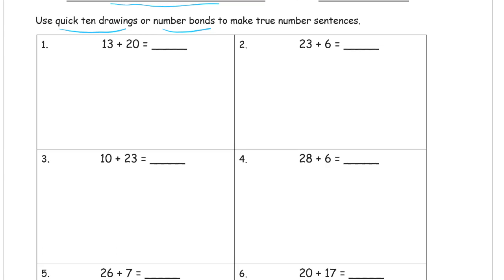13 plus 20. I'm going to draw this. I'm going to do Quick 10s for this. So 13: 10, 11, 12, 13, and two 20s, 33.